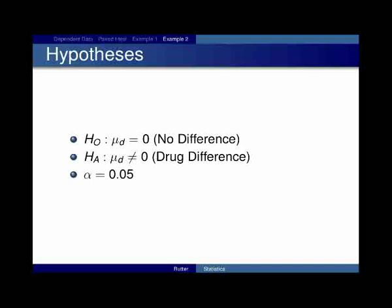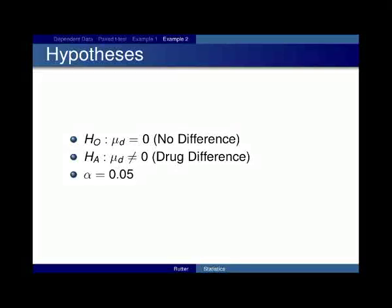And we're just checking to see if there's a difference. So, H0 is going to be mu_D equal to 0, no difference. H_A mu_D not equal to 0, there is a difference. Even though my notes say drug difference, it's really just there is a difference. There's no drug involved here. Sorry, error in the notes. I'll fix that for the online version. Again, we're going to let alpha equal 0.05.